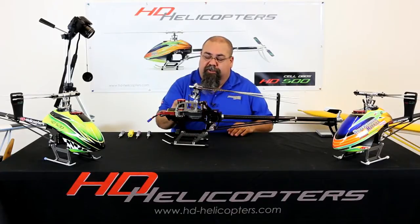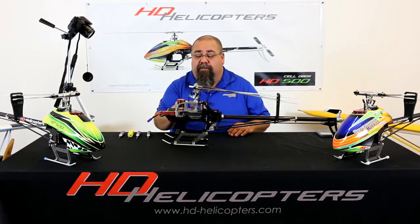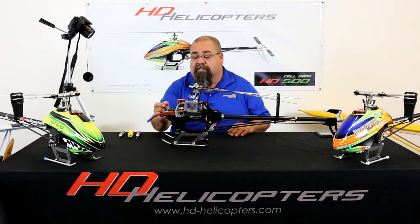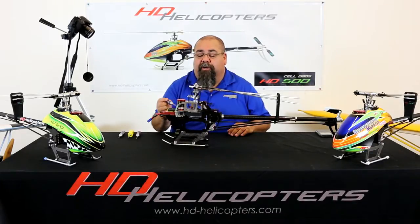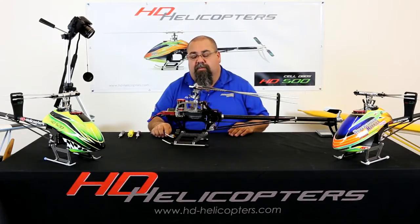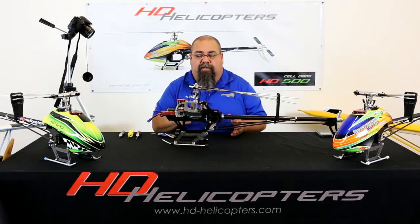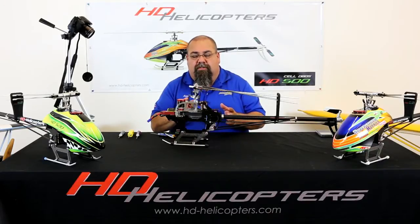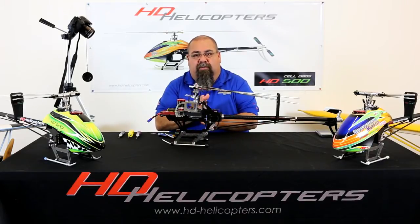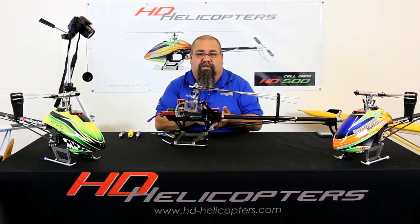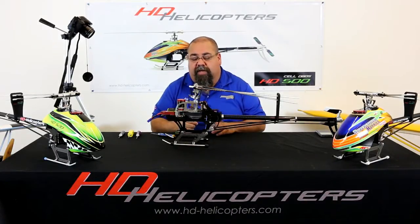On the HDCell you have two plates that have to be dealt with. You have the motor plate itself and you have your ESC plate which also has your counter bearing. Those two plates you want to adjust independently of each other but together. When I say that I mean you want them to be parallel so everything rides through, but you have to adjust them separately.